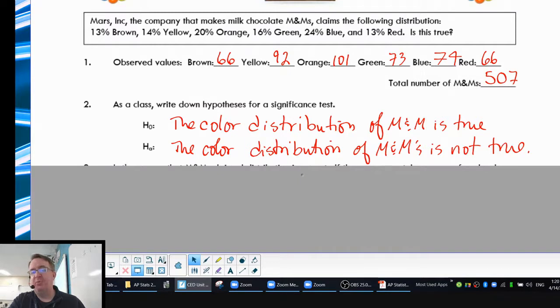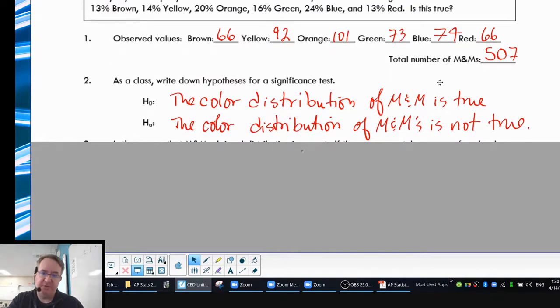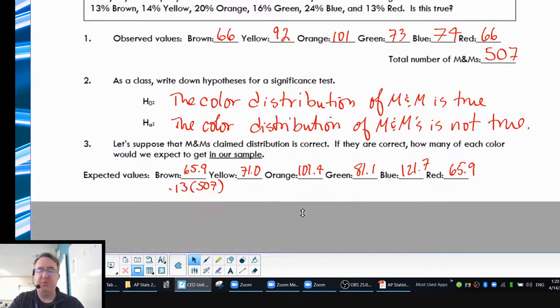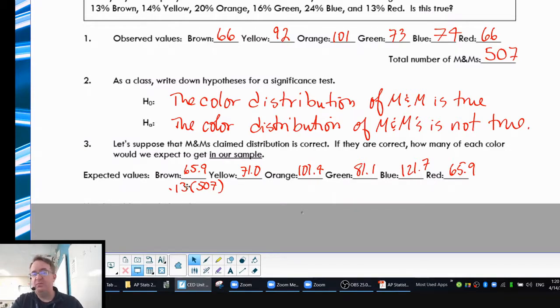Now in terms of the setup, we're going to talk about what would we expect to have happen. So if we had 507 M&Ms, how many of those should be brown, yellow, orange, green, blue, and red? The way that you do that is I'm going to take the percentage. So in this case, 13% times 507, and we would expect 65.9 brown M&Ms out of our 507. So we were actually very close there. You're going to do the same thing for the yellow. If I take 14% of the yellow, multiply that by 507, I should come up with 71.0. Oh, I got 92. And you're going to continue to do that through all.